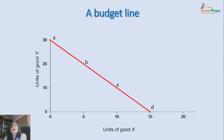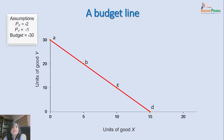Let us see how the budget line looks. As you can see on your screen, we have taken two goods X and Y, measuring units of good X on the X axis and units of good Y on the Y axis. Let us assume the price of X and Y are given as well as the income. These are the three things needed to draw a budget line. Let us say the price of X is 2 rupees, price of Y is 1 rupee, and the money income or budget of the consumer is 30 rupees.